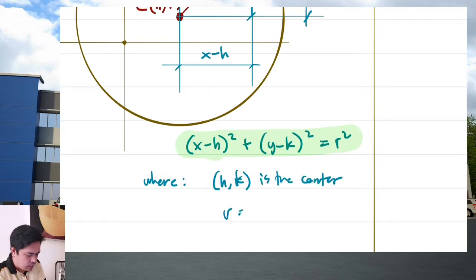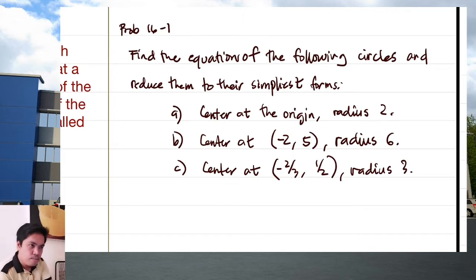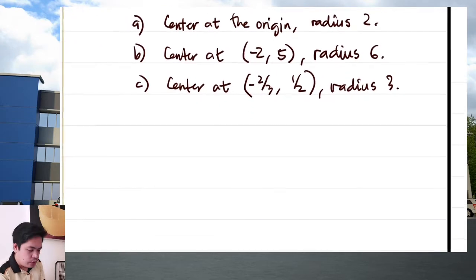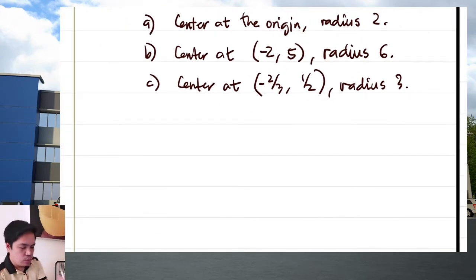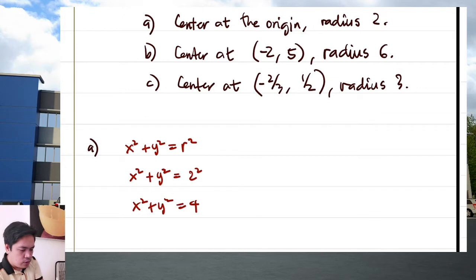Here (h, k) is the center and r is the radius. For Problem 16-1, find the equation of the following circles in simplest form. For letter (a), center at the origin with radius 2: since the center is at the origin, we use x² + y² = r², giving x² + y² = 4.